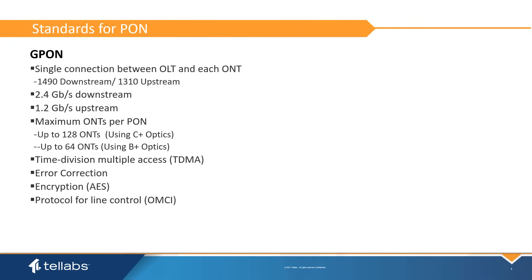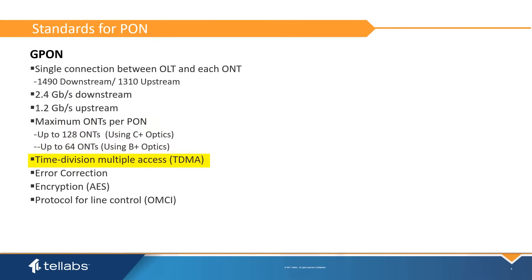PON standards put requirements on the optical medium and the hardware used to access it, and define the way Ethernet frames are converted to an optical signal. The GPON standard sets the parameters of that signal. The bandwidth of the single connection between the OLT and ONTs is 2.4 Gbps downstream and 1.2 Gbps upstream, shared between 64 ONTs using a time division multiplex access protocol. GPON specifies protocols for error correction and encryption, and defines a protocol for line control, which includes authentication.